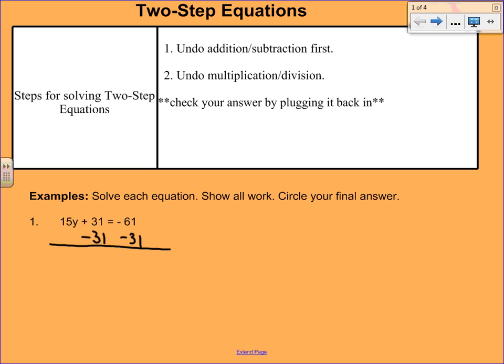On the left-hand side, the plus 31 and the minus 31 cancel. You bring down the 15y, and on the right-hand side, you have a negative 92.